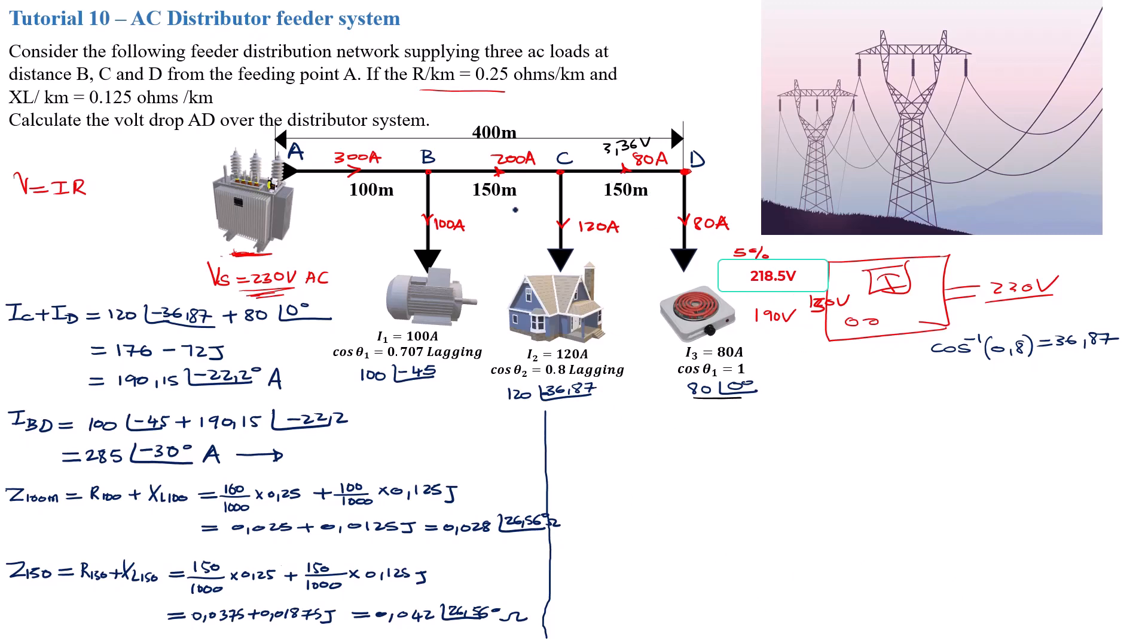Okay, let's finish it off. The voltage drop on section AB, so that's going to be V_AB. V_AB is going to be the current on this section times the impedance of the section. The current of this section is this current here, 100 with an angle of negative 45 degrees, and we added it with this current.